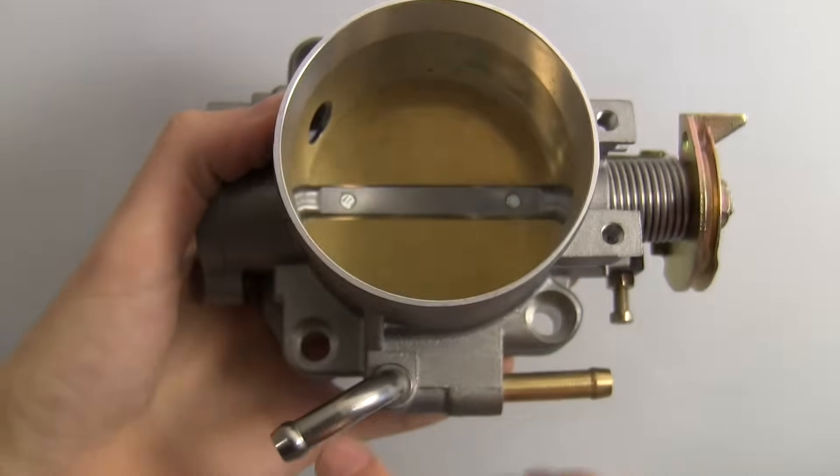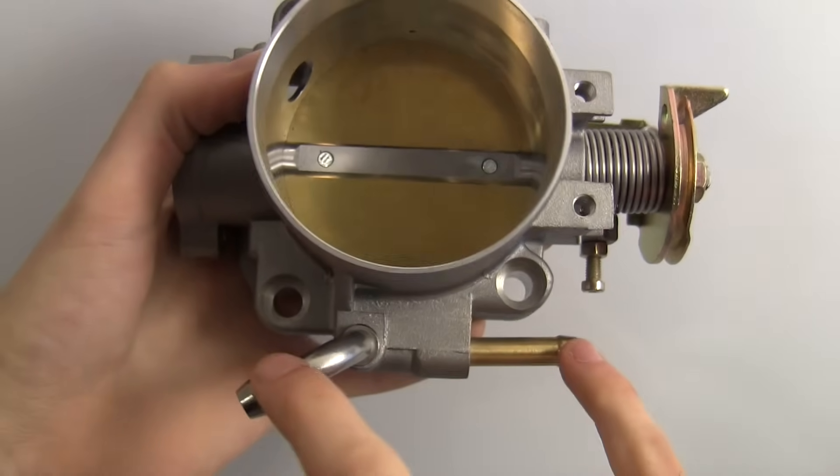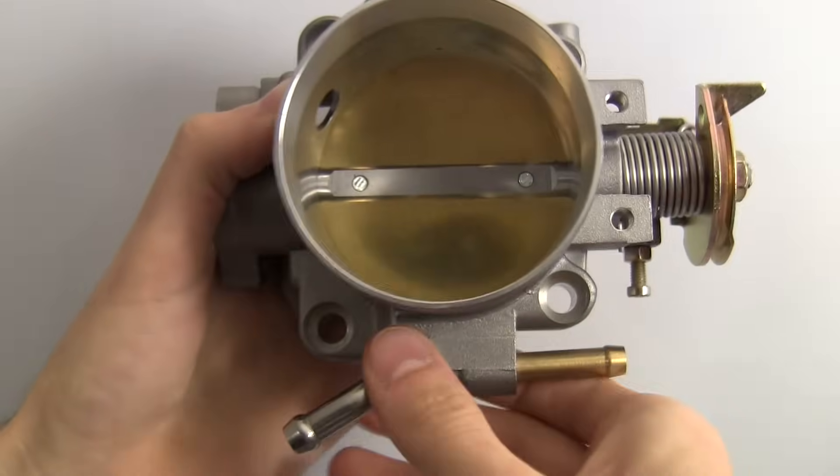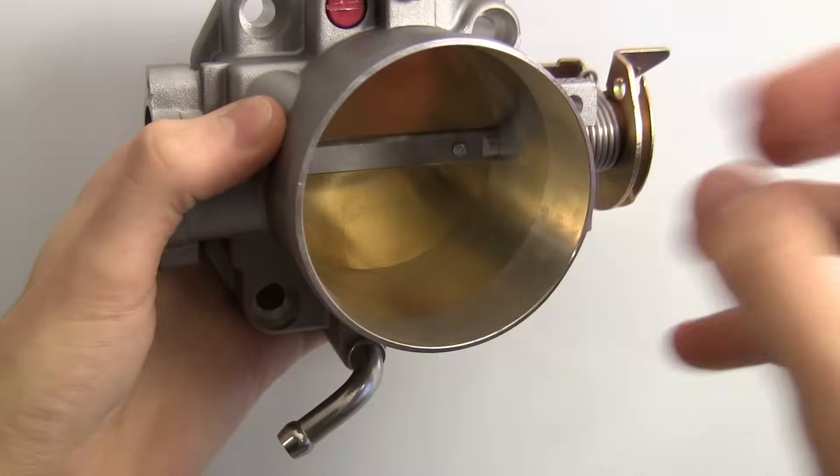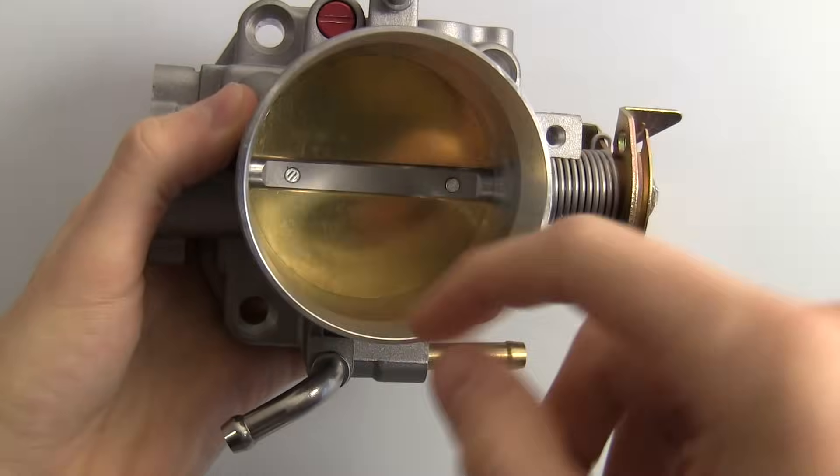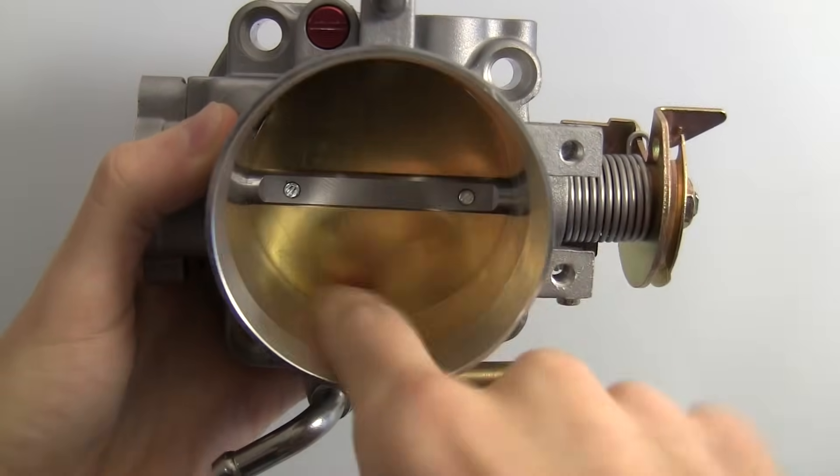Now on the bottom of the throttle body you'll notice these connections here to connect up hoses and these are actually for coolant lines. Basically what happens is if you're in sub-freezing temperatures and you've got air coming through here you might have some condensation buildup on the throttle body that could freeze this valve closed.